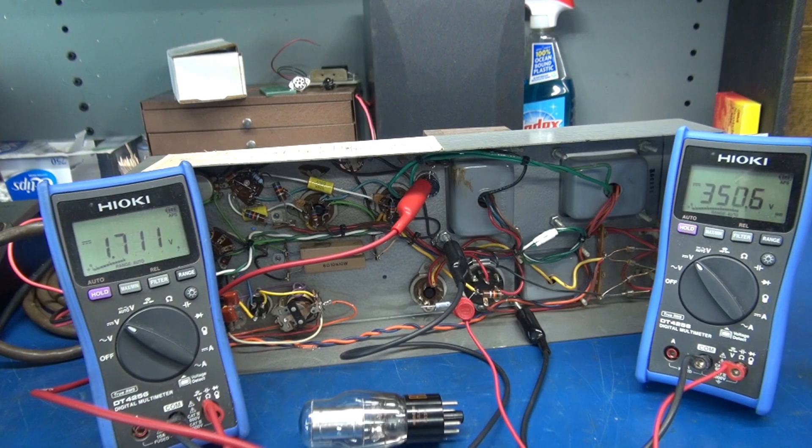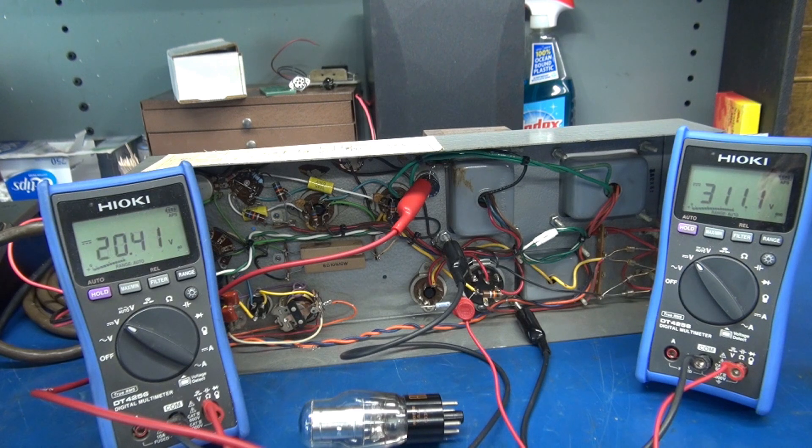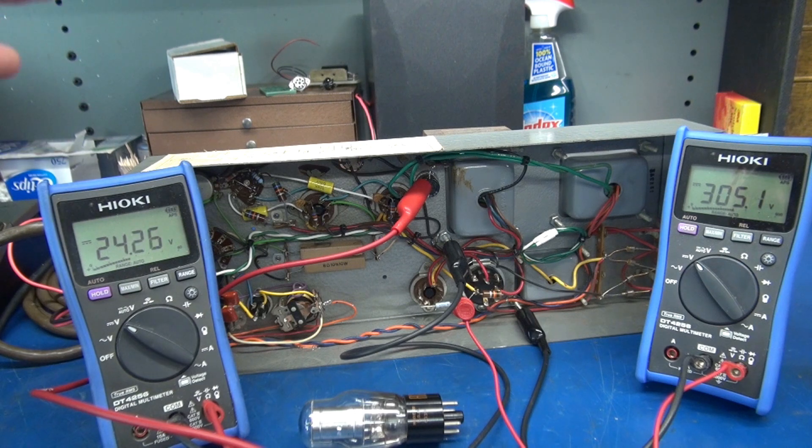Same as before we're monitoring the cathode voltage here. We're looking for 25 volts and we're monitoring the screen voltages on that meter and we're looking for approximately 310 volts. I am now running the OD3 voltage regulator.